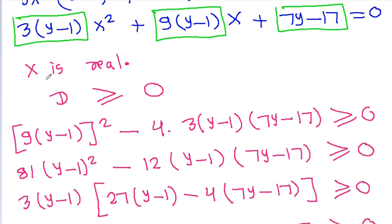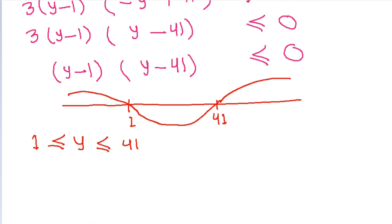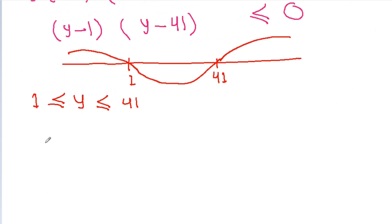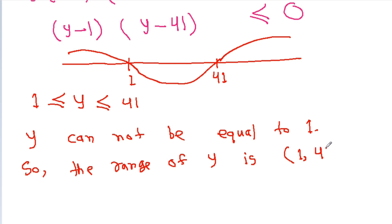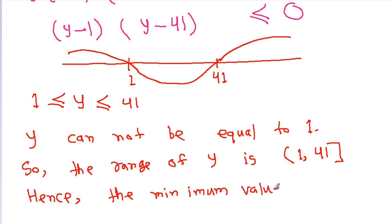We have given that x is real, but when y = 1, the coefficient of x² and the coefficient of x both become 0, so there is no x left in the equation. That means y cannot be equal to 1, so the range of y is the open interval (1, 41], and hence the minimum value does not exist.